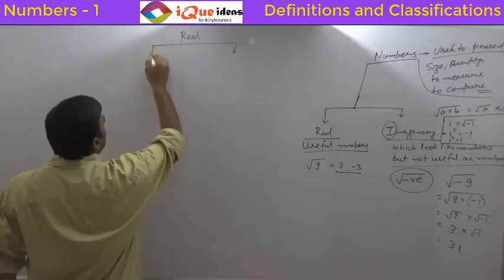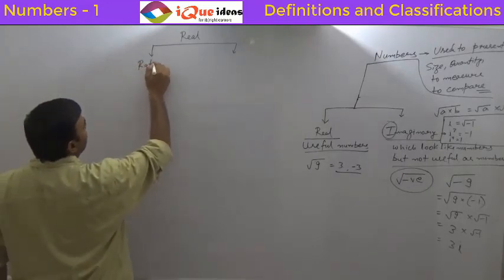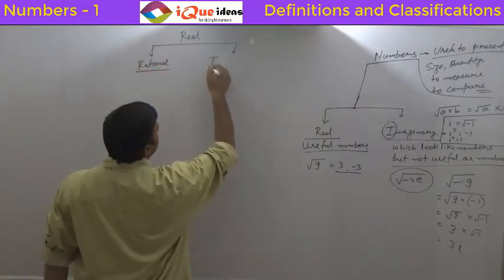And from here, actual work for us starts. One part is rational number and the other part is irrational number.